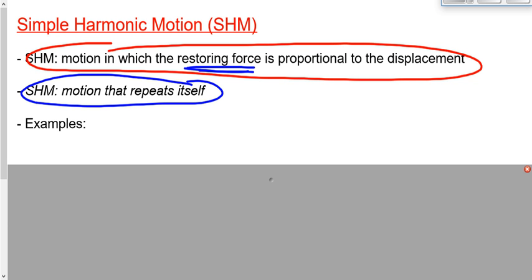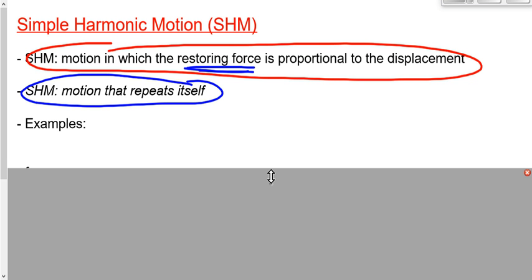The motion repeats itself because the restoring force is proportional to the displacement. Another example would be a spring. The most commonly used examples that we can see most often would be a spring, an elastic, a speaker, a piece of metal, a guitar string — something like a spring or an elastic. A pendulum as well. Generally, when motion repeats itself, it's because the restoring force gets bigger as the displacement gets bigger.